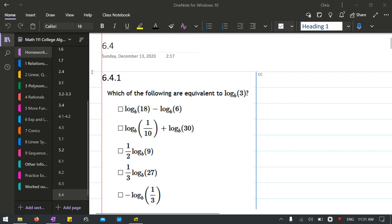In the first one, we have a subtraction, and then we have an addition in the second. We have a coefficient or multiplication outside, another coefficient or multiplication outside, and then a negative.